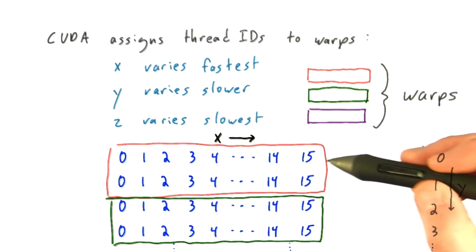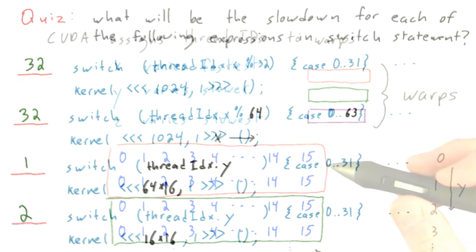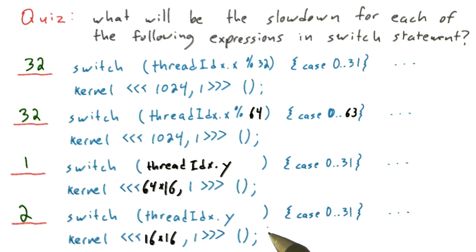And so now, as you can see, there are two different Y IDs for the threads in a single warp. So we'll end up having to execute this code twice for this warp, once with one Y ID, once with the second Y ID. We'll end up with a total of a 2X slowdown.